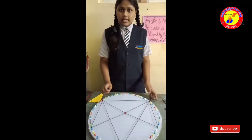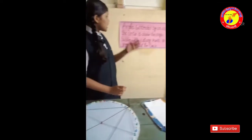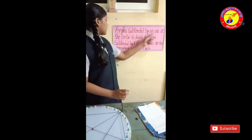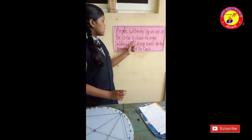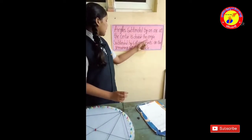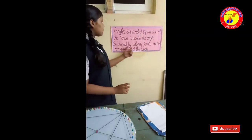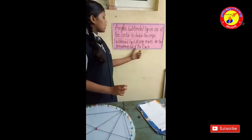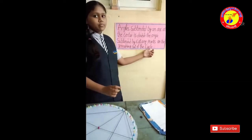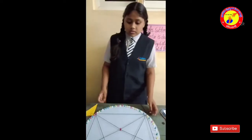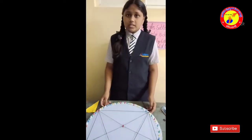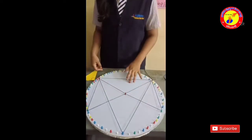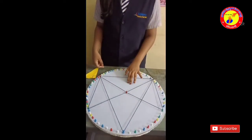Our second theorem is: the angle subtended by an arc at the center is double the angle subtended by it at any point on the remaining part of the circle. So it says that this angle is double this angle.